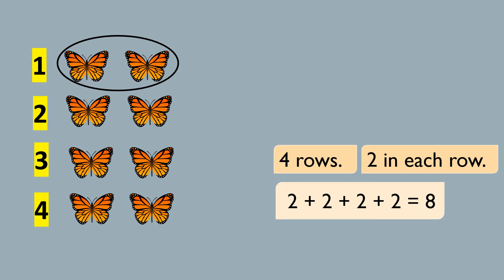So 2 plus 2 plus 2 plus 2 equals 8. It is the same as skip counting by twos: 2, 4, 6, 8.